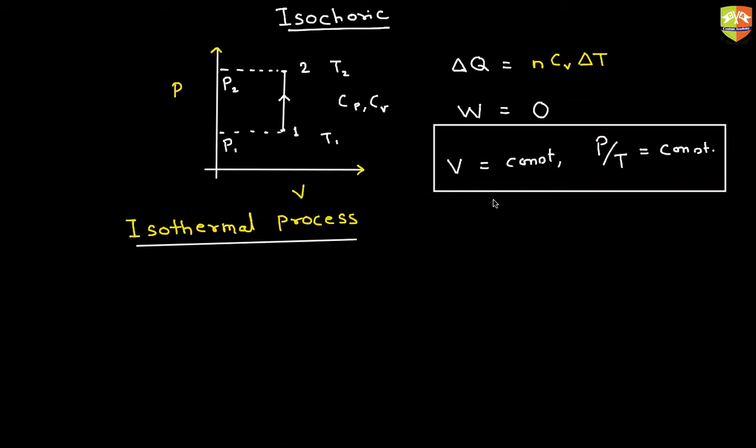From where P by T constant comes? Because PV is equal to NRT. P into V is NRT. Basically, V is equal to NRT by P. So if V is constant, T by P should be constant. And if T by P is constant, P by T is also constant.